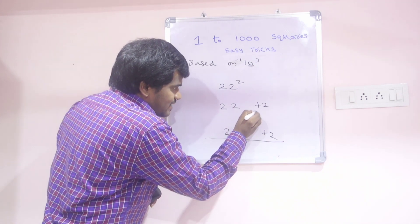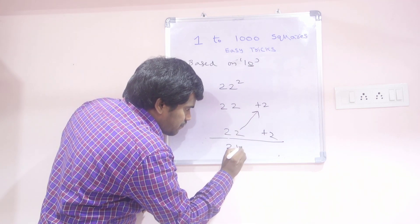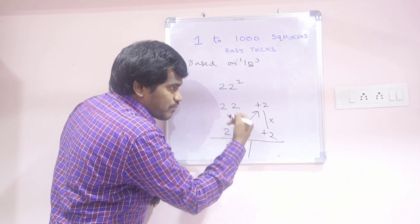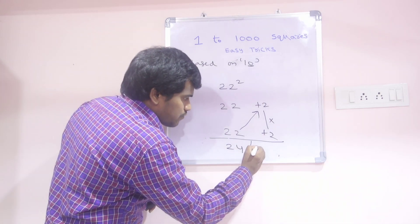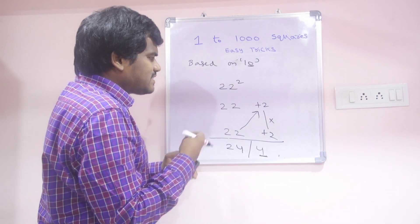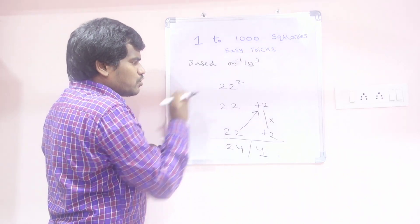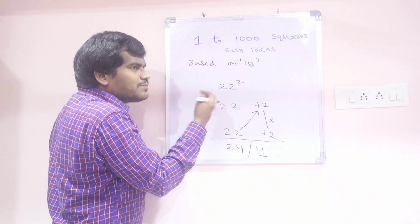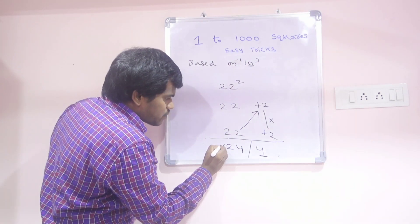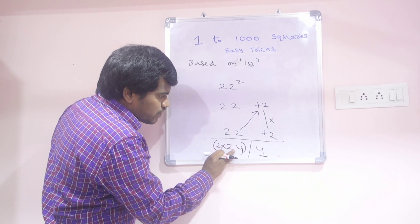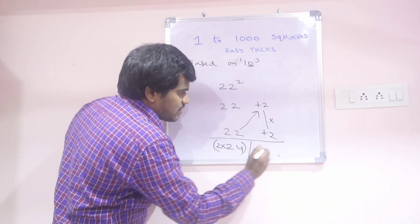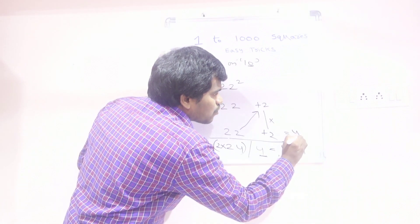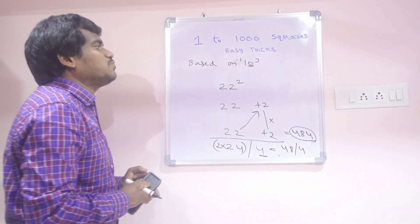Now cross add: 22 plus 2 is 24. Slash — multiply these two: plus 2 times plus 2 is 4, single digit only. But this is near to 20, and we are based on 10 — 20 means 2 times. So multiply 2 here: 2 times 24 is 48. Slash 4. So the answer is 484, the square of 22.